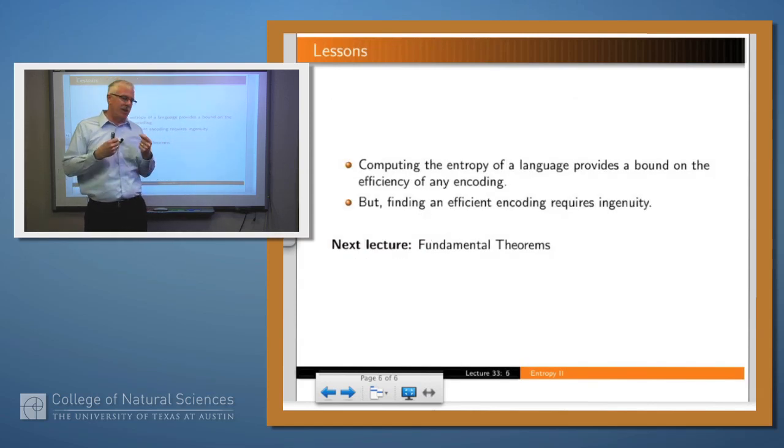So what have we said in this lecture? We said that computing the entropy of a language gives us a lower bound on the efficiency of any encoding for the language. And we can approach that, often arbitrarily closely, but sometimes we can't get there entirely. Building an efficient encoding requires some ingenuity. We may have to encode sequences of events, or we may have to come up with a clever encoding. We have to use something like Huffman encoding. But we can find better and better encodings. Thank you.